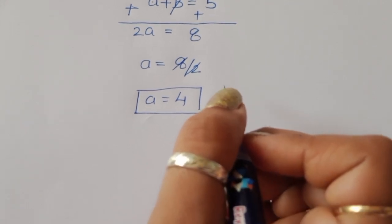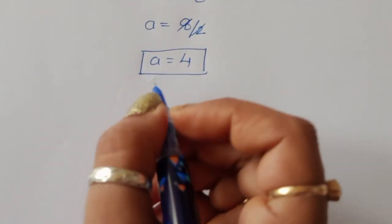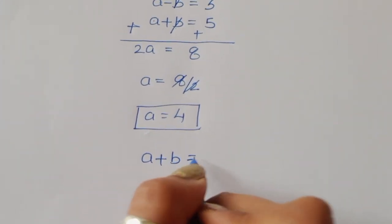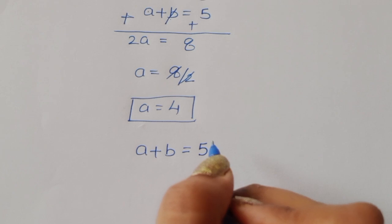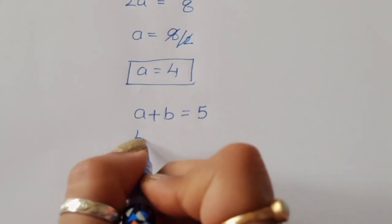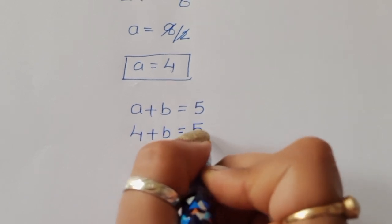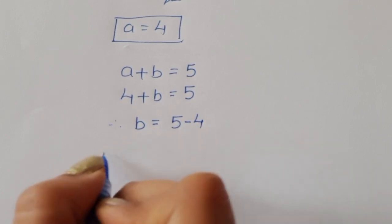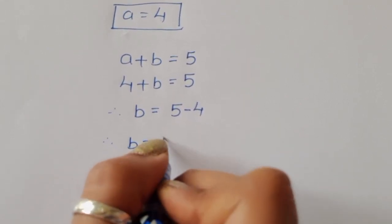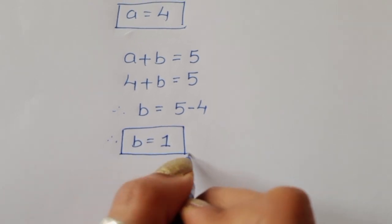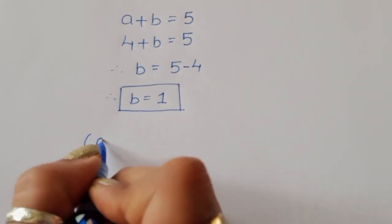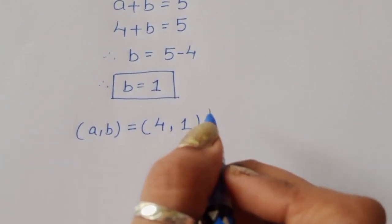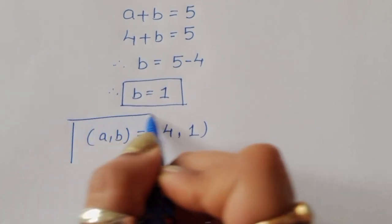Now we have to find the value of B. From equation 2, A plus B is equal to 5, and the value of A is 4. So 4 plus B is equal to 5. Therefore B is equal to 5 minus 4, which is 1. So from case 2, the values of A and B are 4 and 1. We got two solutions: (8, 7) and (4, 1).